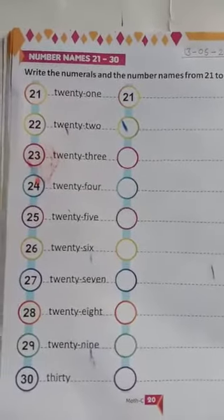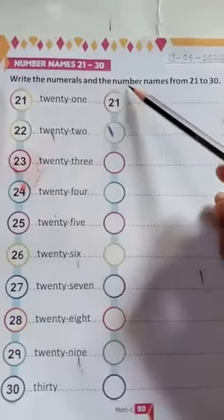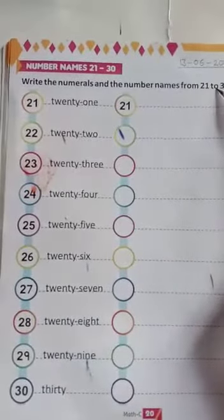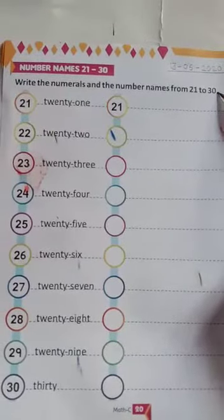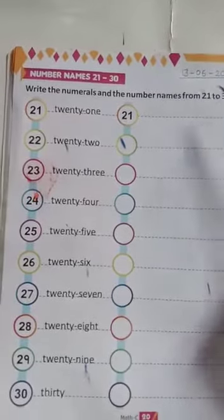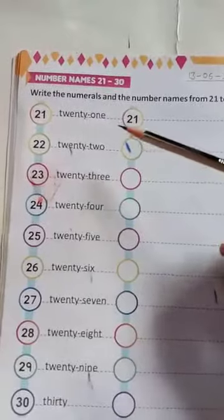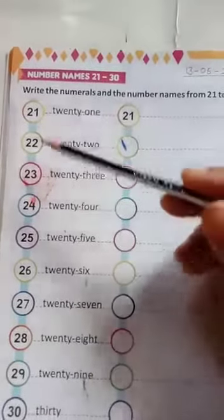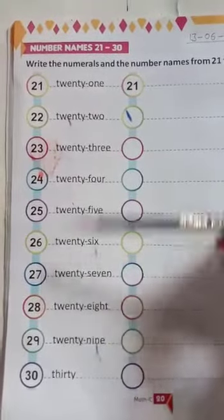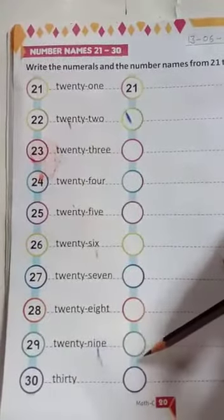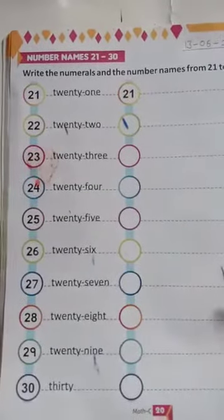Students, today's our new topic is write the numerals and the number names from 21 to 30. From 21 to 30, numerals and number names are both already written here. We have to see them and write here.